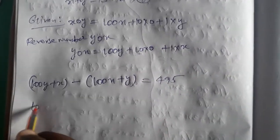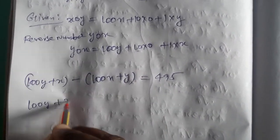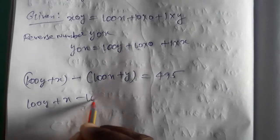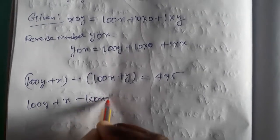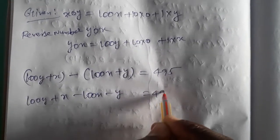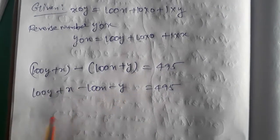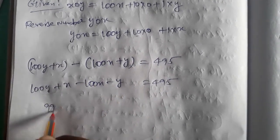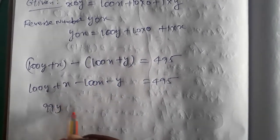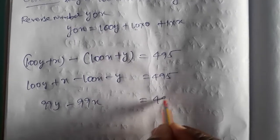Taking inside: 100y plus x minus 100x minus y equals 495. Simplifying: 100y minus y is 99y, and x minus 100x is minus 99x. So 99y minus 99x equals 495. This is equation 2.